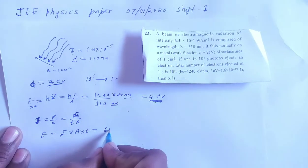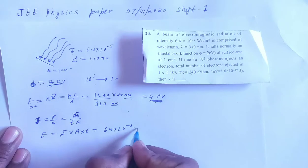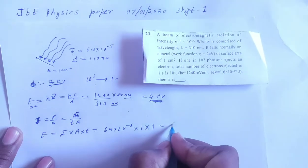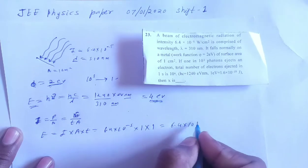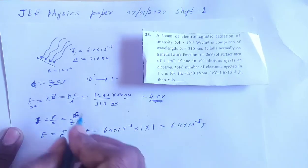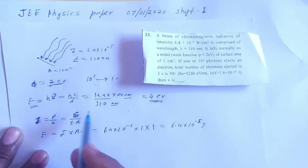Intensity is 6.4 × 10⁻⁵, area is 1, and time is 1 second. Then energy is 6.4 × 10⁻⁵ joule. This is total energy of light. And one photon energy is 4 electron volt.